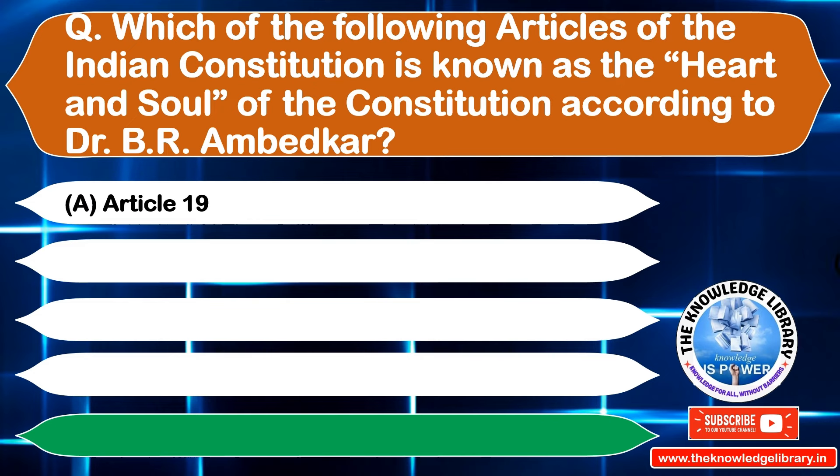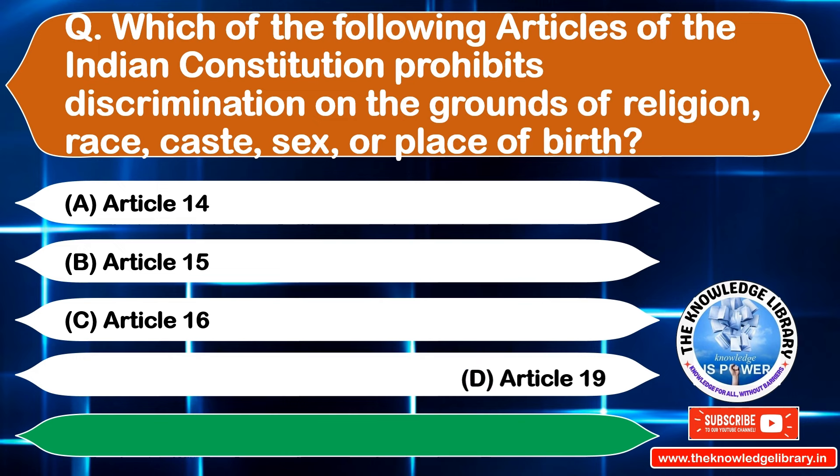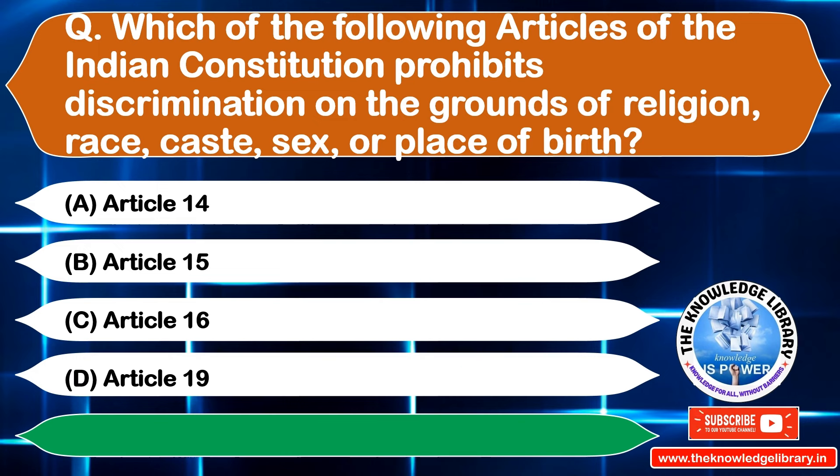The next question is: which article of the Indian Constitution prohibits discrimination on the grounds of religion, race, caste, sex or place of birth? Option A: Article 14, Option B: Article 15, Option C: Article 16, Option D: Article 19. The correct answer is Option B: Article 15.